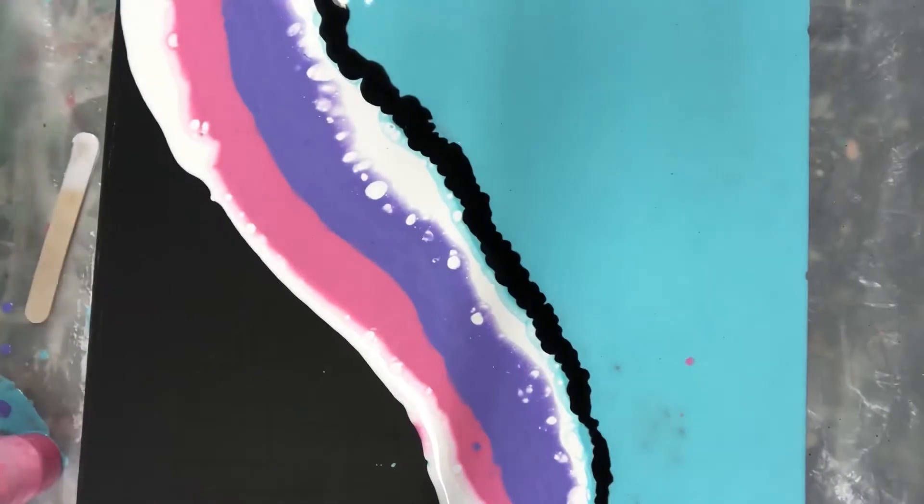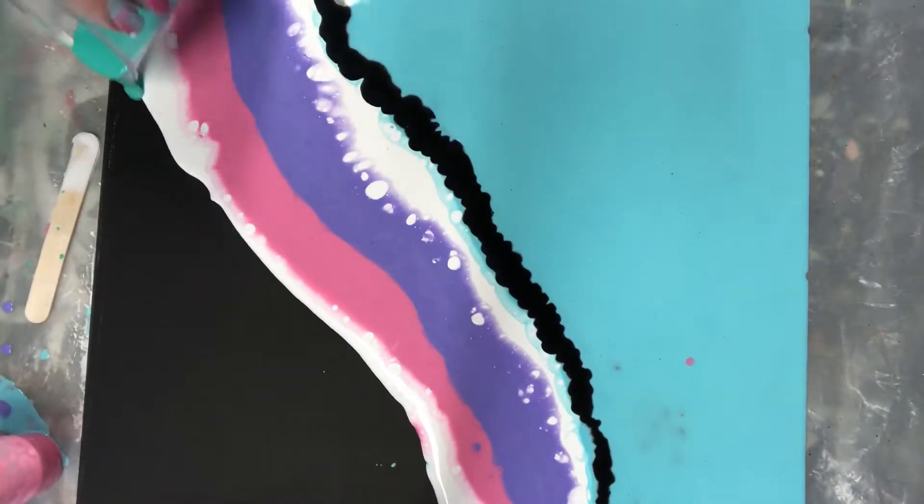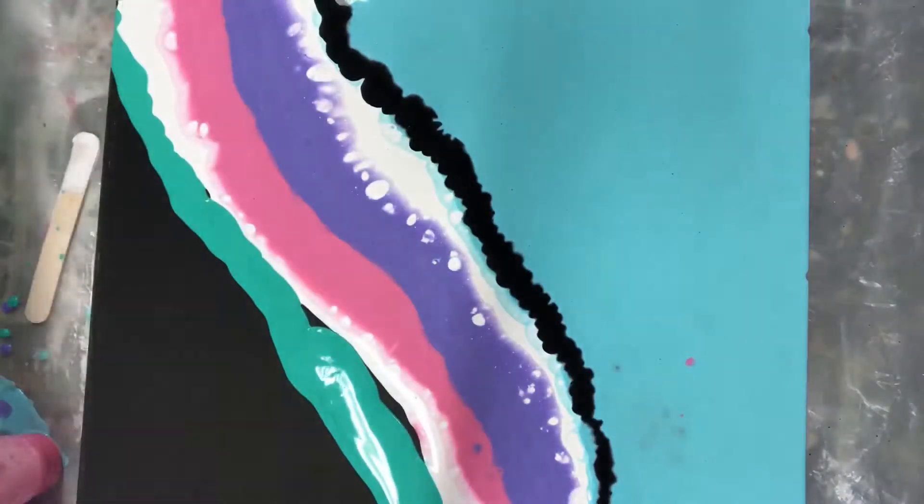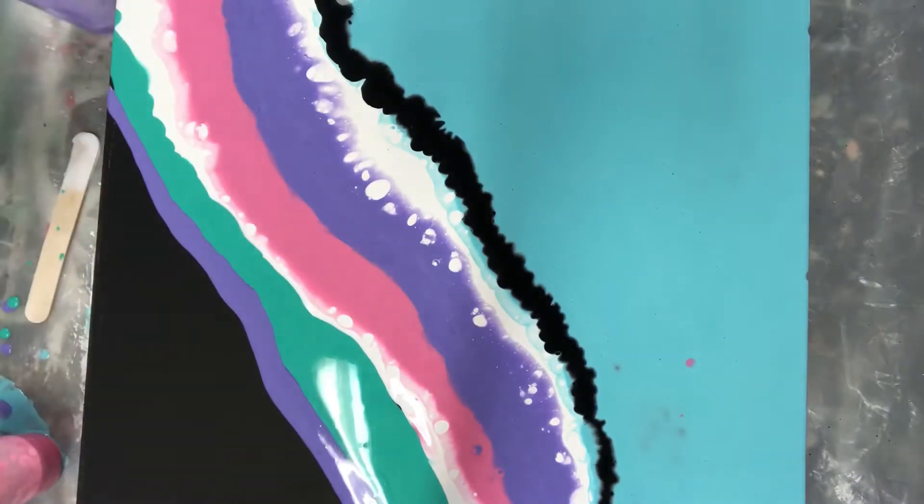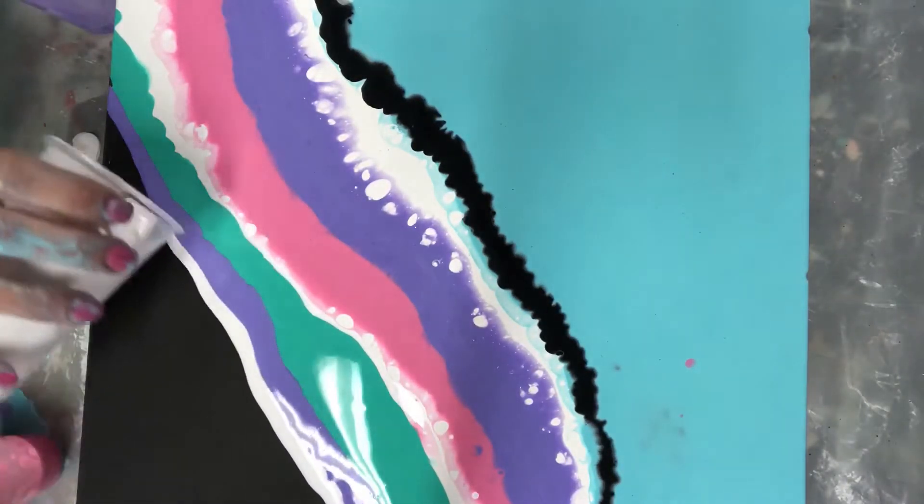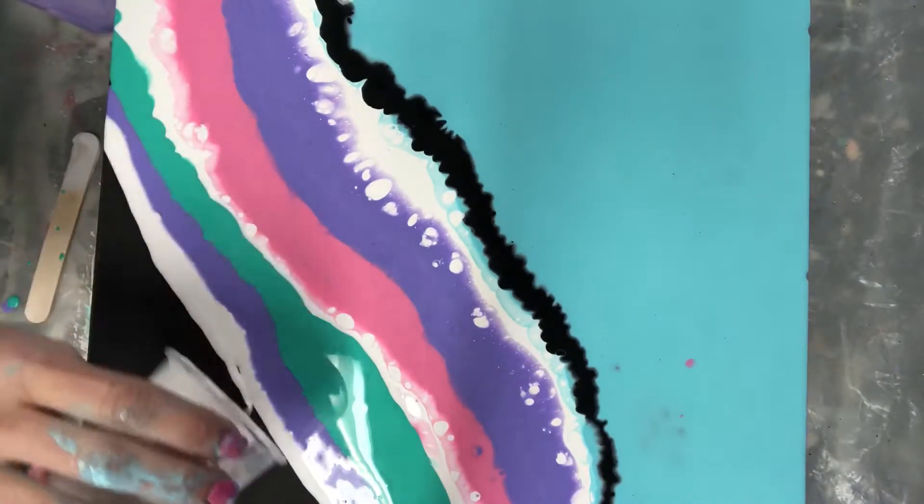I put black on my square in the back just to sort of give me a home base, something to start from because I knew that I wanted to incorporate some black into this piece. You don't have to do that or you can make your background any color that you want.